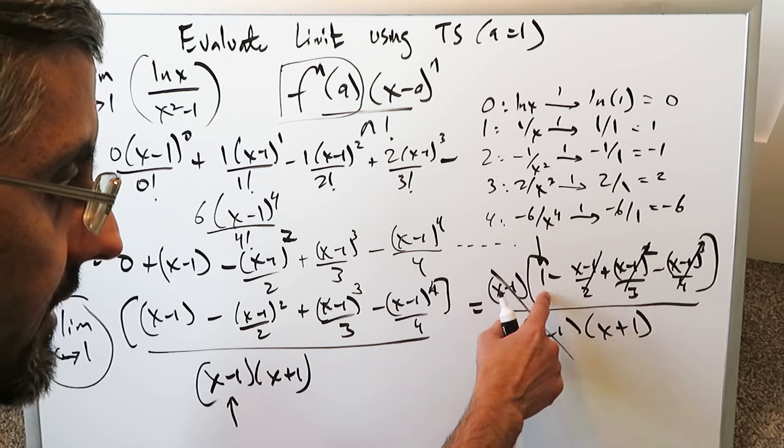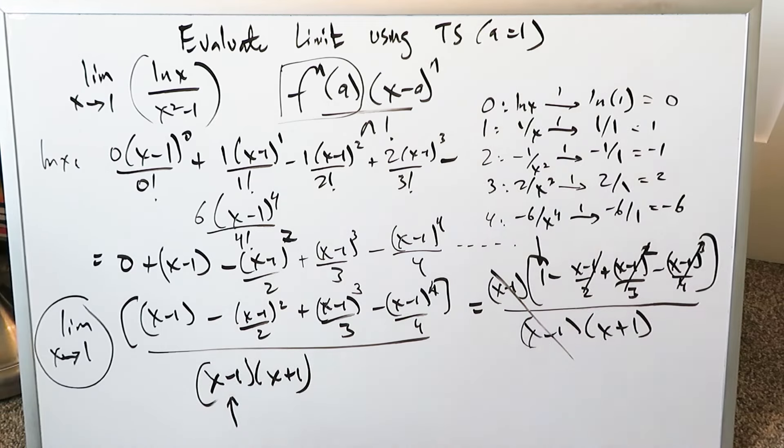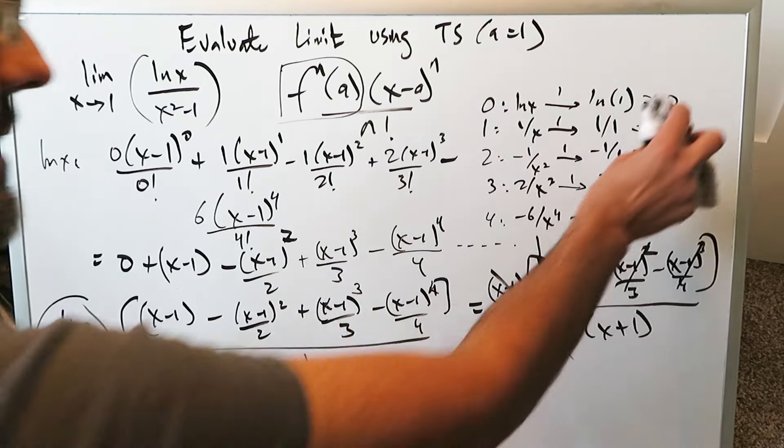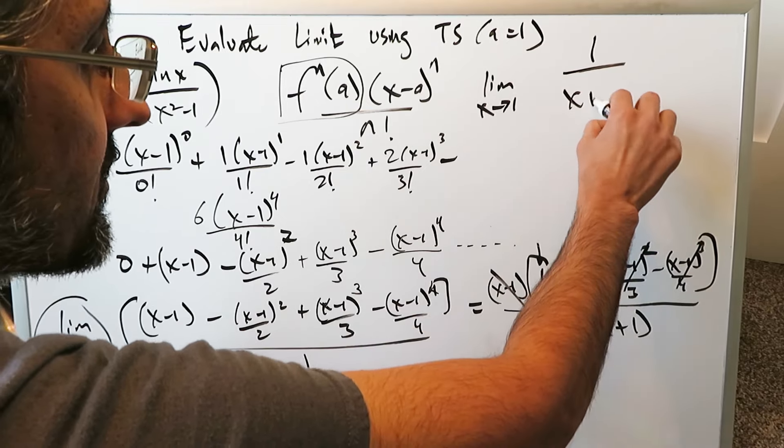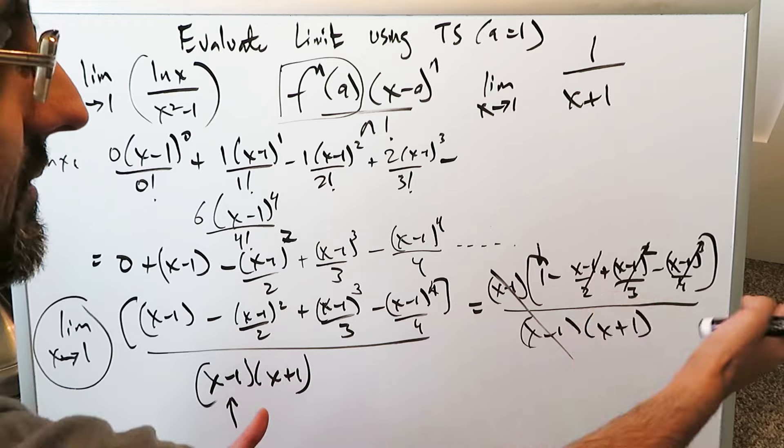1 minus 0, all of that is irrelevant. The only thing relevant here is a 1. So let's complete this right over here for you. Limit as x approaches 1, you are left with 1 in the numerator and you have x plus 1 in the denominator. Everything else zeroing out.